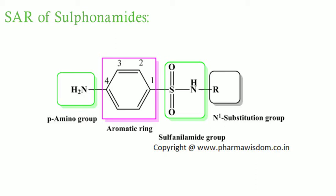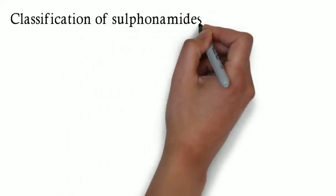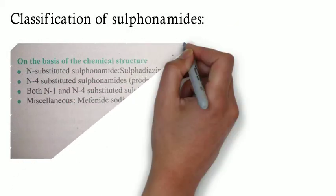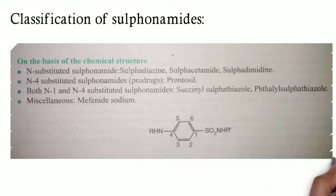Moving on to the classification of sulfonamides on the basis of chemistry, there are three types: N-1 substituted sulfonamides, N-4 substituted sulfonamides, and both N-1 and N-4 substituted sulfonamides.